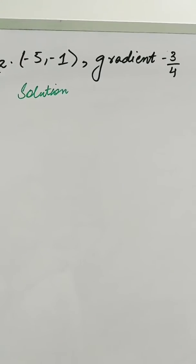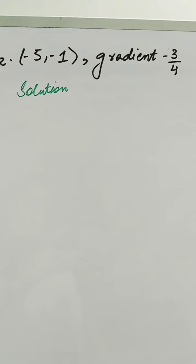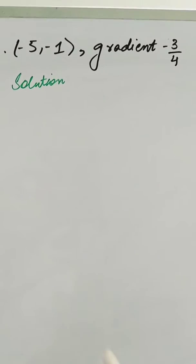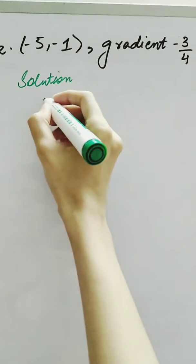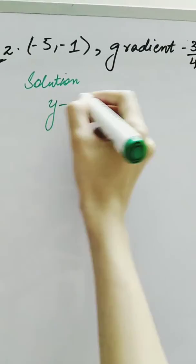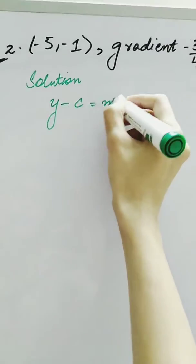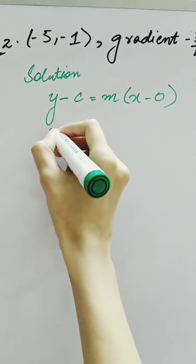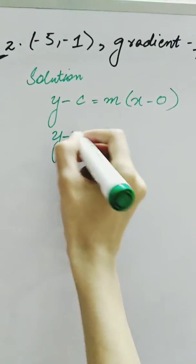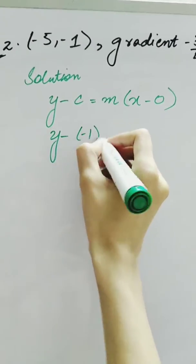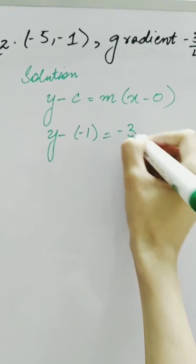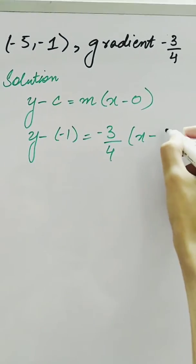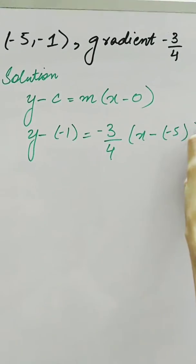We are given another set of coordinates: (-5, -1) and gradient = -3/4. We have the equation of line as y - y₁ = m(x - x₁). Here, the y-intercept is -1, gradient is -3/4, and x-intercept is -5.